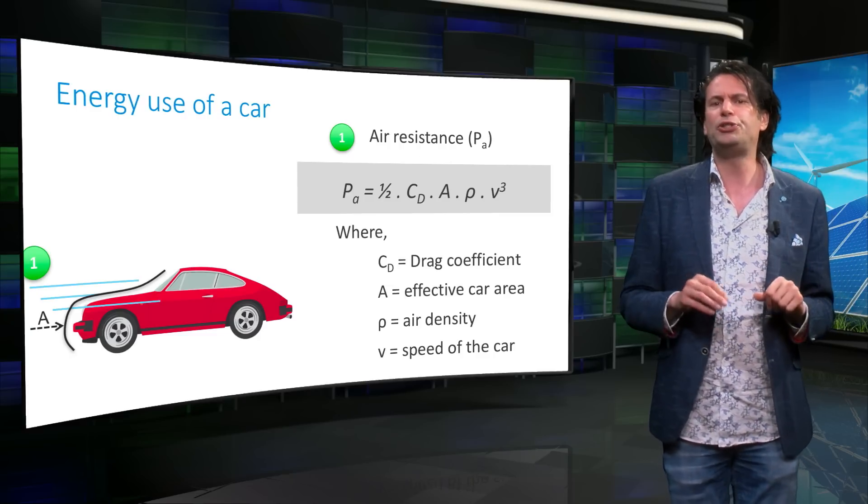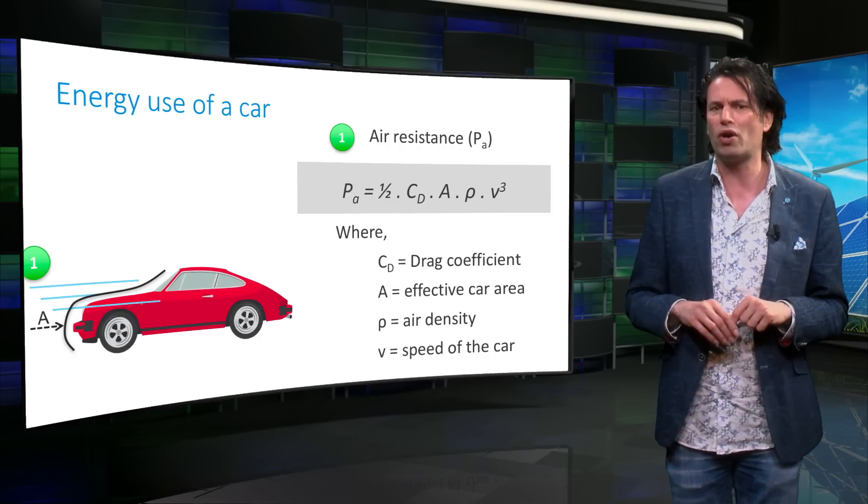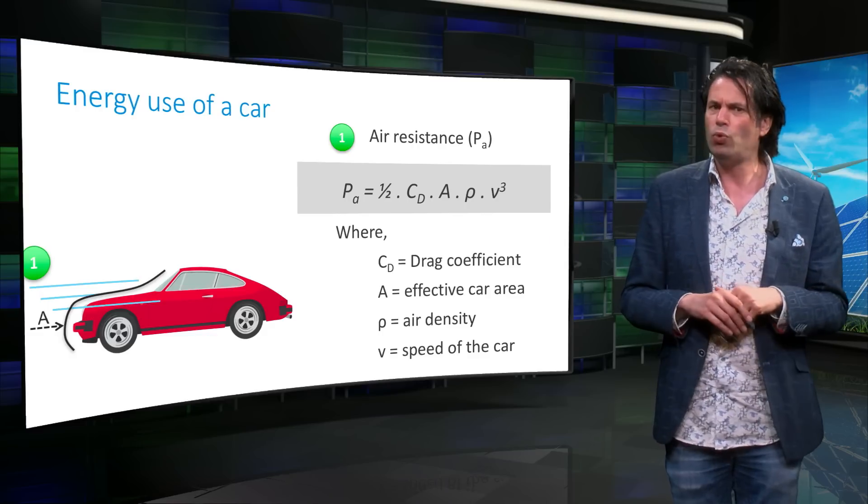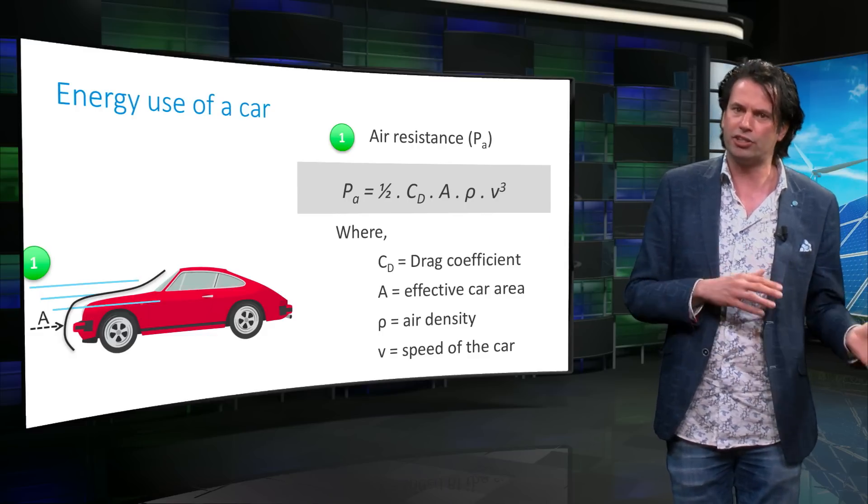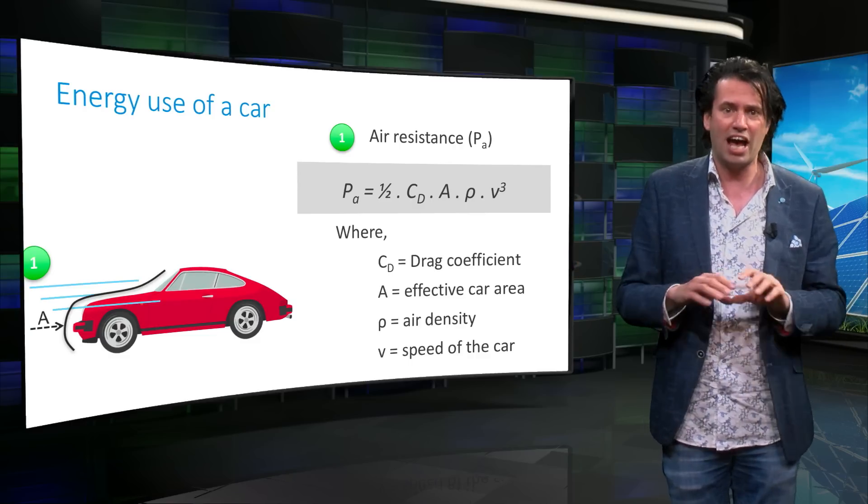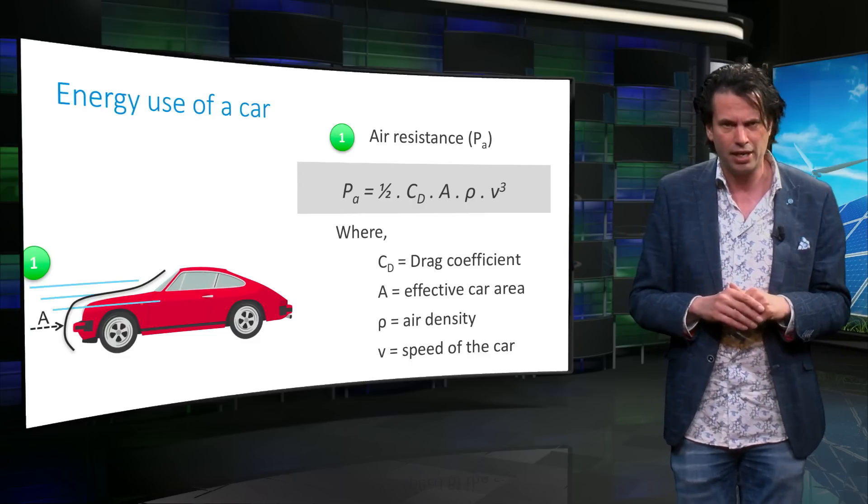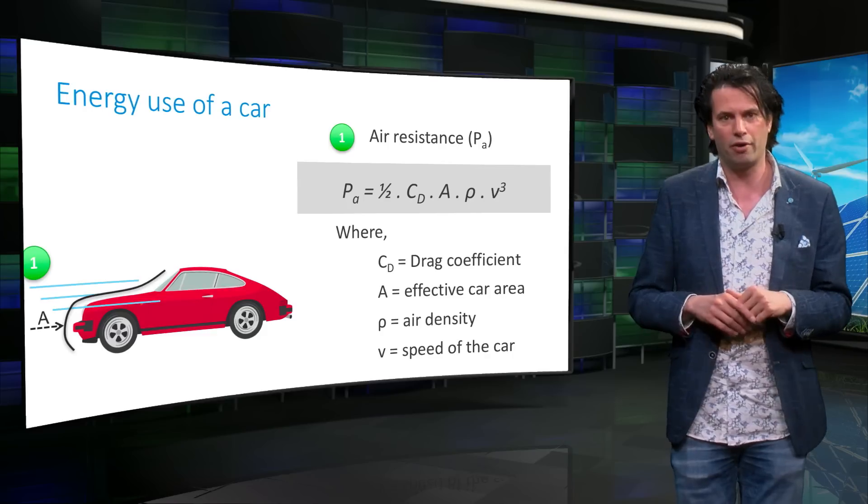From the formula, you can see that a lower A cross-section would result in a lower air resistance. This is why racing cars are lower and have a smaller cross-sectional area, making them more aerodynamic.